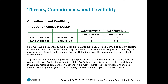Regarding commitment and credibility: there is a game between two firms producing small or big engines. In this sequential game, Race Car is the leader and will do best by deciding to produce small cars, knowing Far Out will produce small engines in response. Can Far Out induce Race Car to produce big cars instead? Far Out can make its threat credible by visibly and irreversibly reducing some of its own payoffs in the matrix — by shutting down or destroying some of its small engine production capacity.